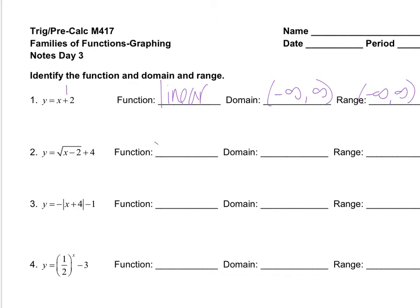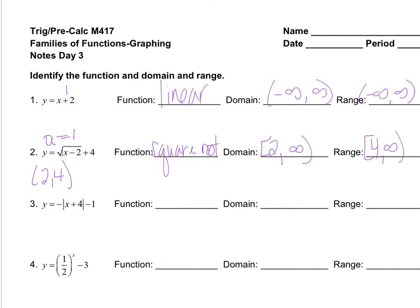If we look at number two, this is a square root function — there was a square root in the equation. When we're working on square root functions, it's always going to come from the starting point, which in this example is going to be the point two comma four. Since the coefficient in front of x is positive, we are going to start at the starting point, close bracket at two, and go to positive infinity. For the range, since a equals one — that's the number in front of the square root and it's positive — we are going to start at four and go to positive infinity.